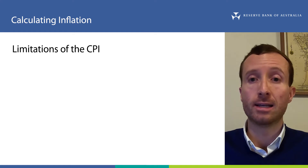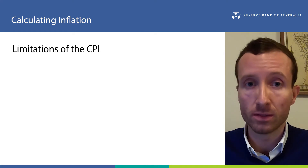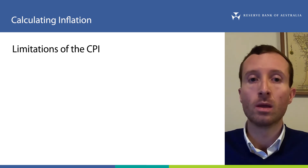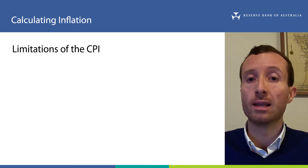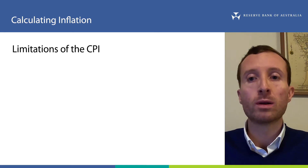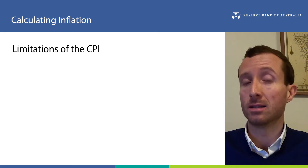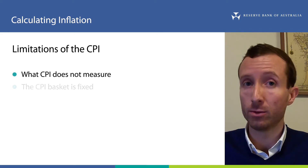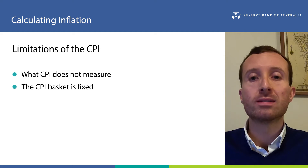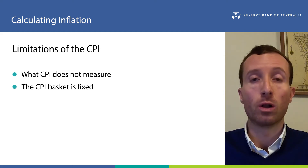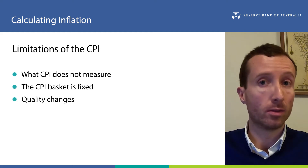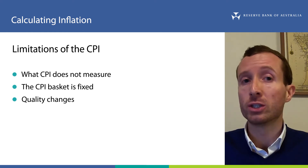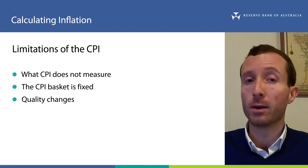Now that we've looked at calculating inflation for a basket of goods and services, it's important to consider some limitations of the CPI calculation. In this video I will only give a high-level overview. We will look at the things that CPI does not measure, the consequences of the CPI basket being updated only annually, and we will consider the impact of improvements in the quality of goods and services included in the basket. You can check out others in the explainer on inflation and its measurement on the RBA website.